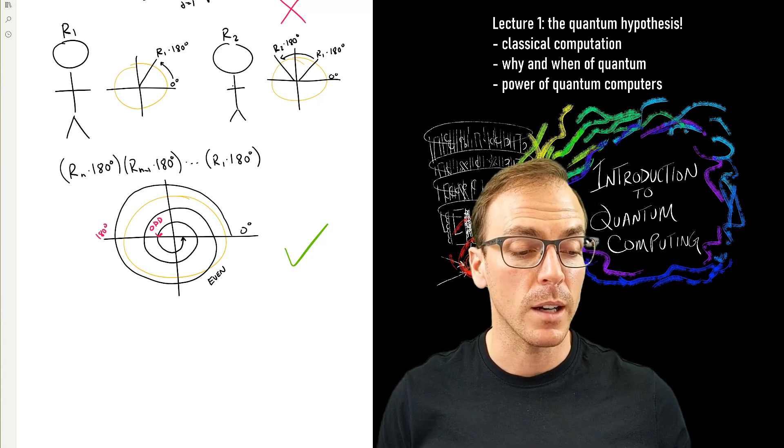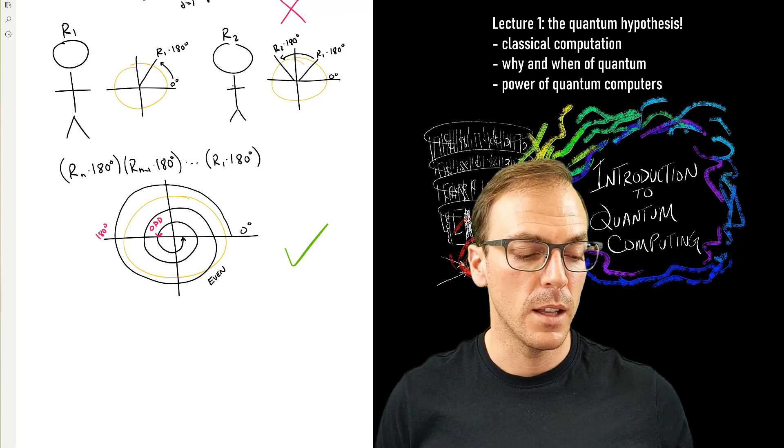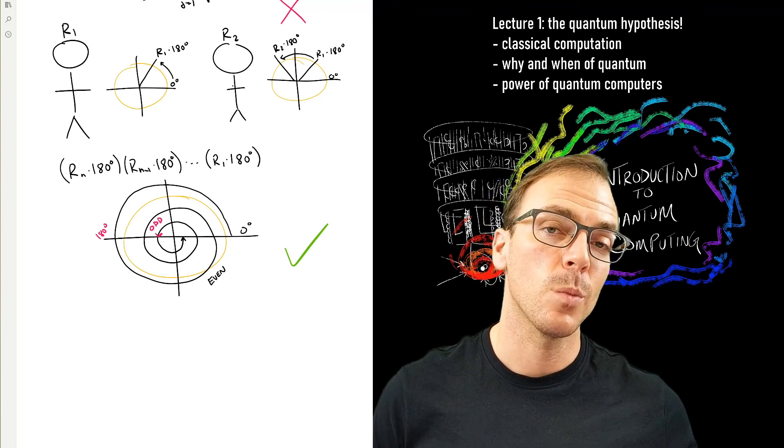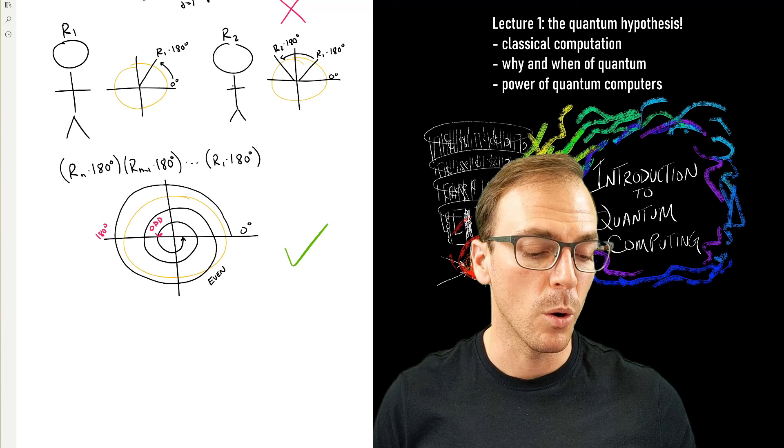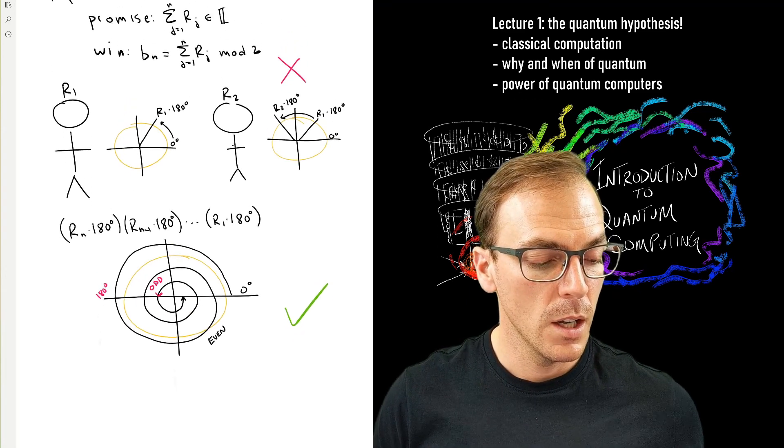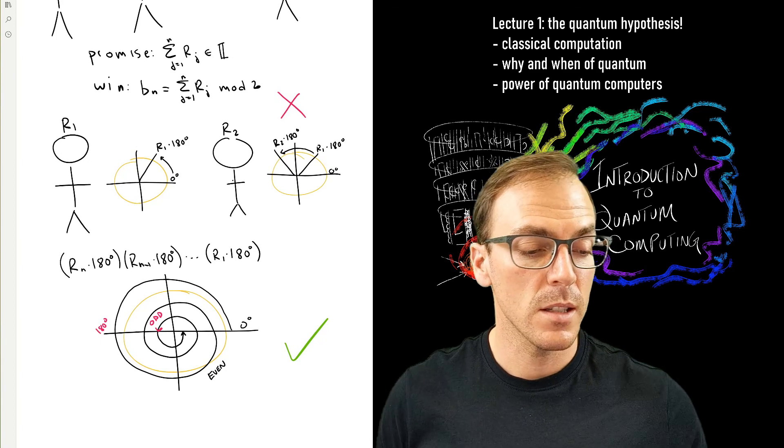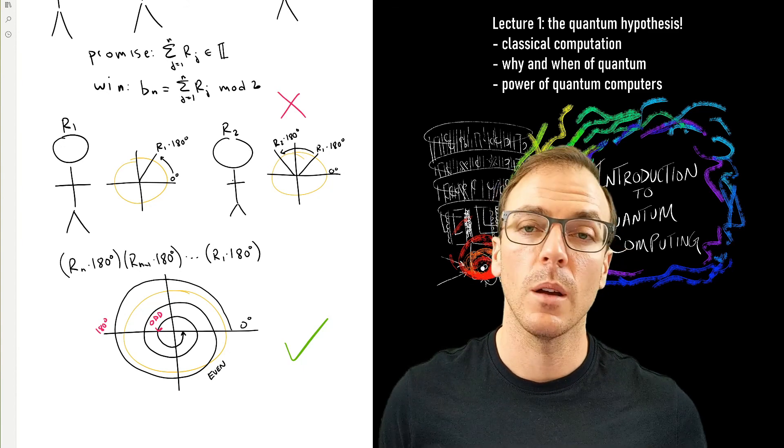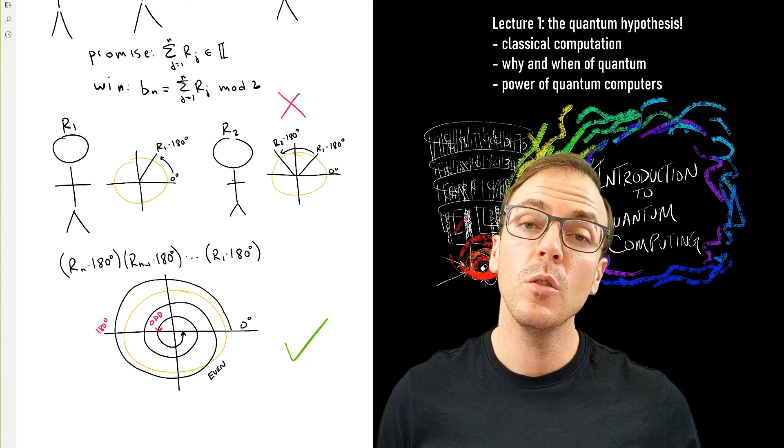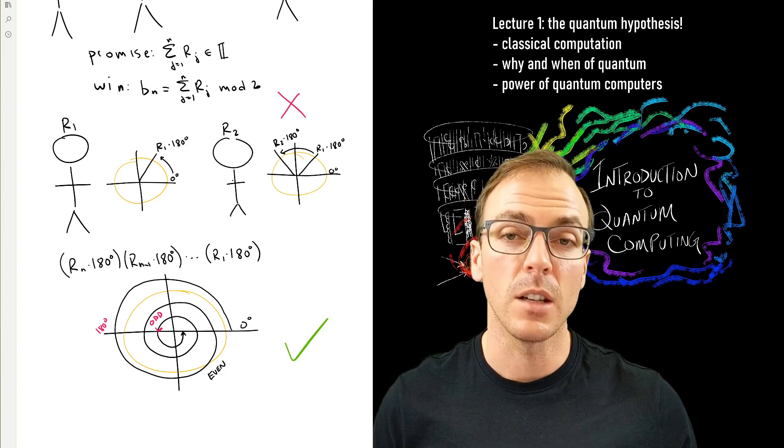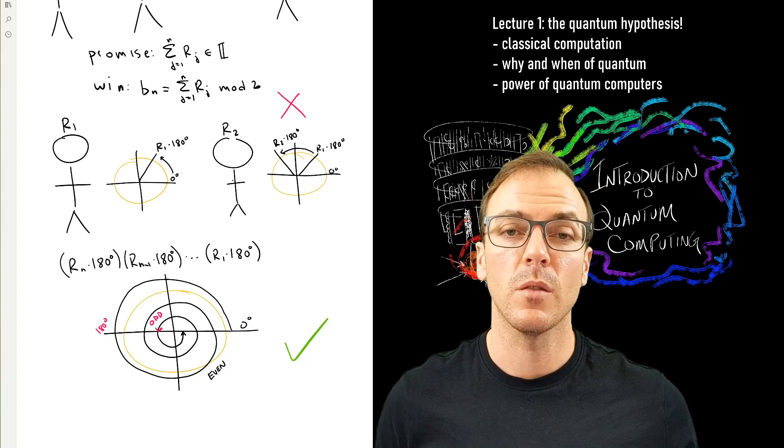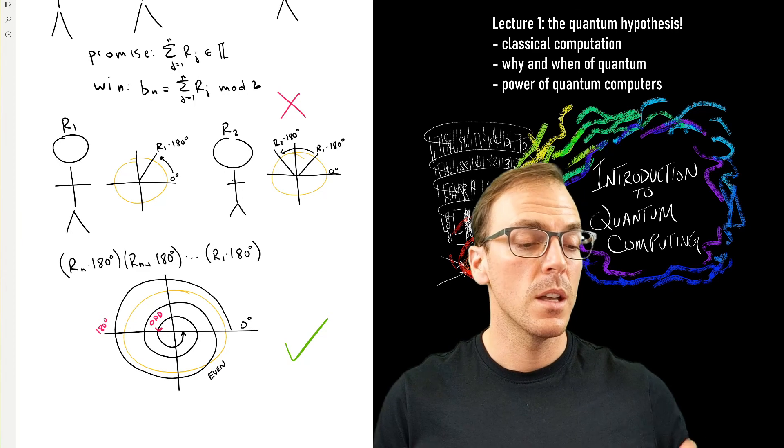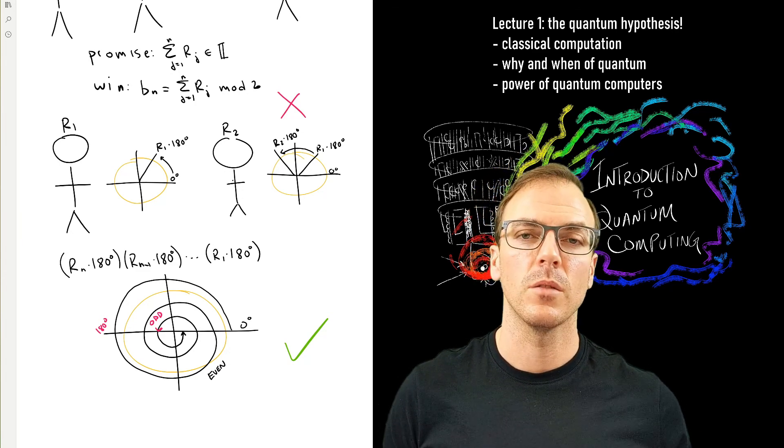And we can ensure that the final state of this quantum information is one of two possibilities, so that when the last player looks at their quantum information, they can report the correct answer. So you can see that there's this task which, if we were using classical data, just is impossible. Almost right out of the gate. Whereas, if we were given a new type of information, then we could actually achieve the task. And we'll see lots of examples of this in the subject. Where, if we're given this quantum information as a resource, then we can solve problems that we cannot solve with classical information.